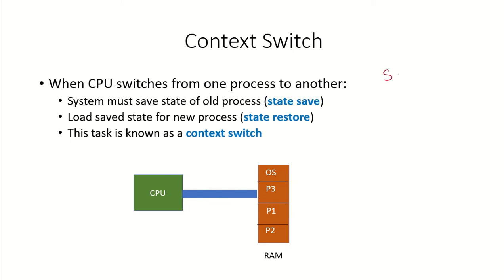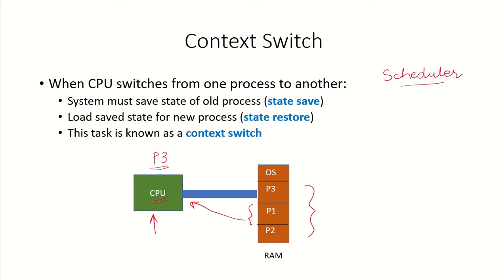We have seen in the earlier video that it is the job of the CPU scheduler to assign the CPU to one of the processes available in the ready queue. So suppose P3 was running on the CPU and now P3 has to go for an event, or the time slice of P3 has expired, so the CPU will be released and assigned to some other process by the scheduler. Suppose now the CPU is being assigned to process P1 — this whole scenario when the CPU switches from one process to another is known as a context switch.